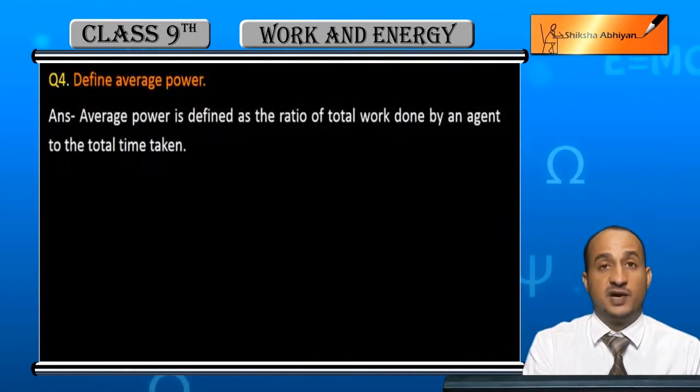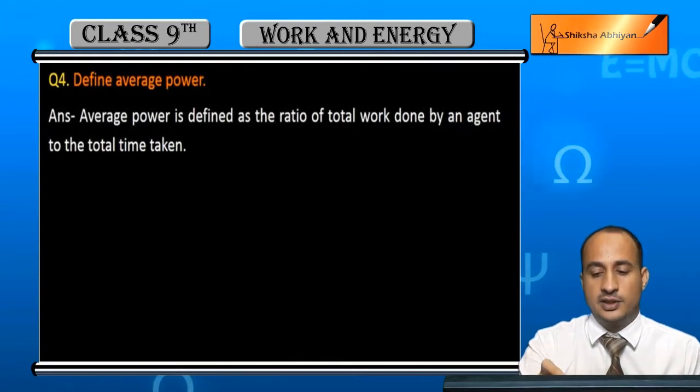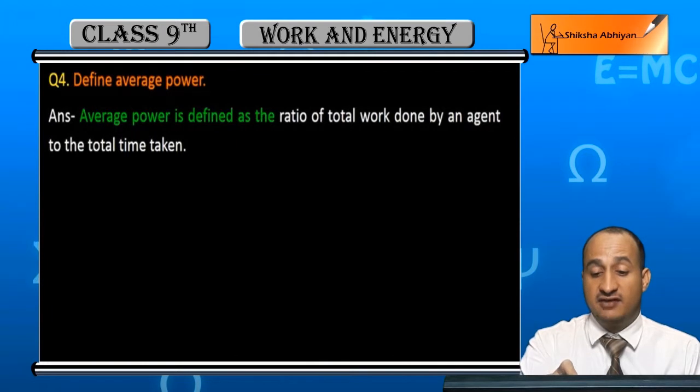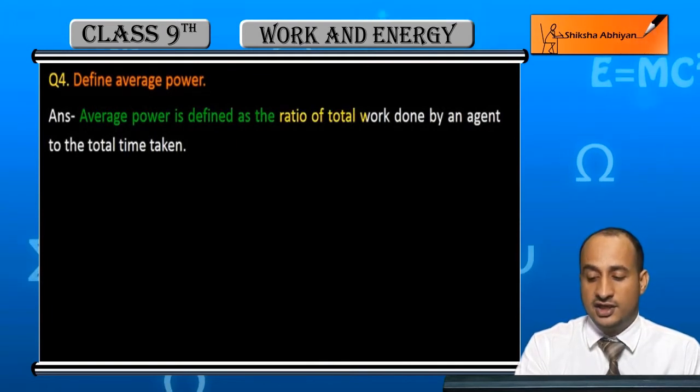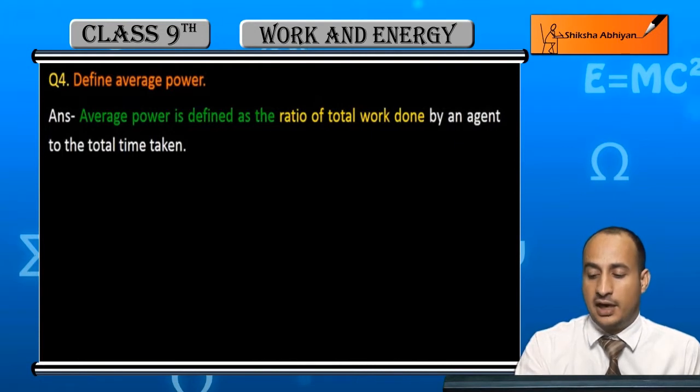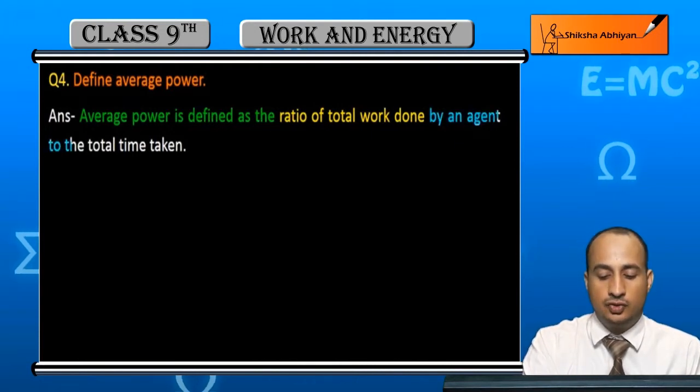Define average power. Average power kya hoti hai aapko batana hai. See, average power is defined as the ratio of total work done by an agent to the total time.